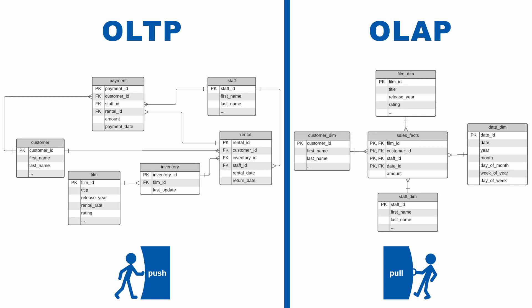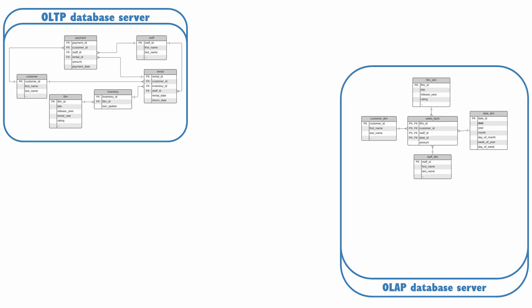A database designed for OLTP will not function well as a source for analytics, so the operational data needs to be reshaped and copied into a relational OLAP database. A couple of decades ago, it was common for operational data to be stored in a mainframe database like DB2, and for the analytical data to be stored in a database like Oracle.